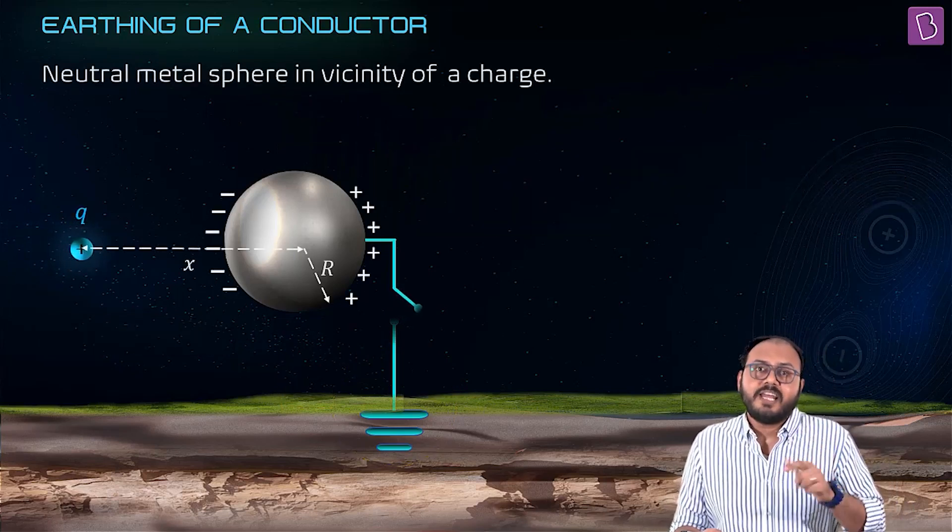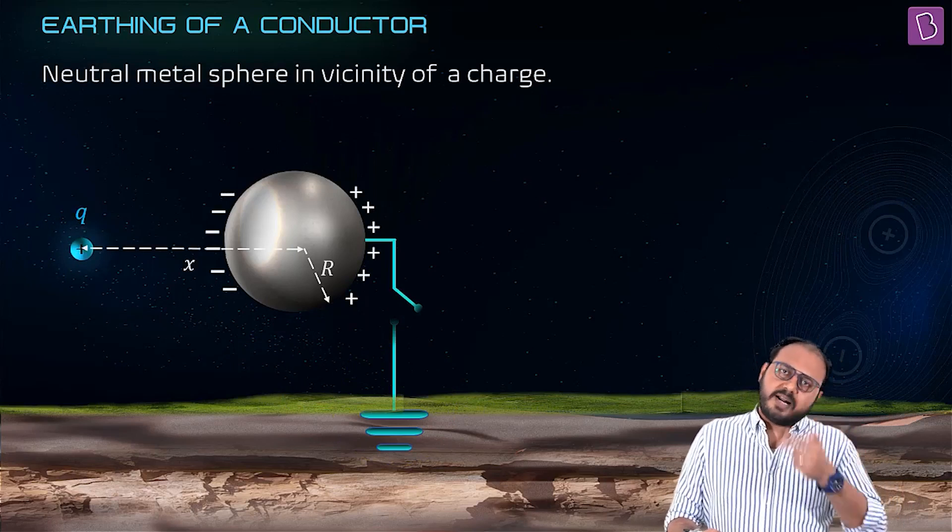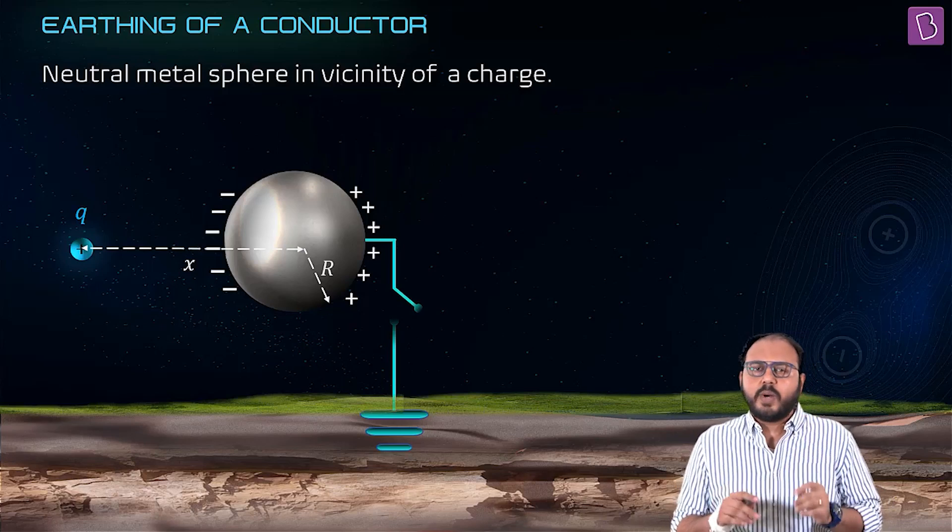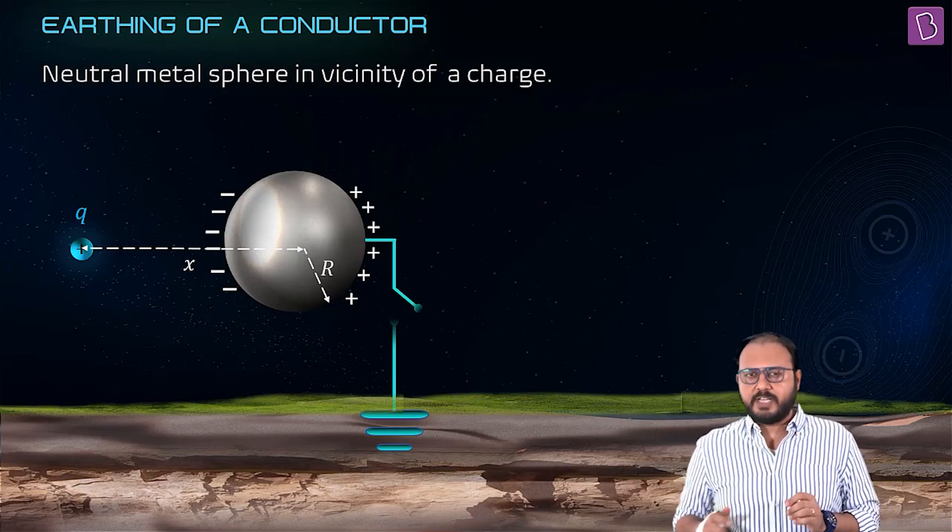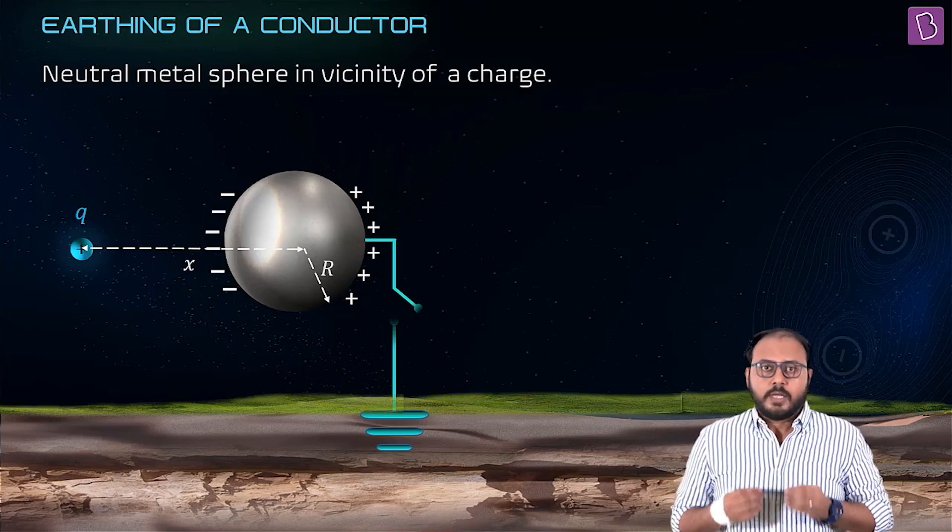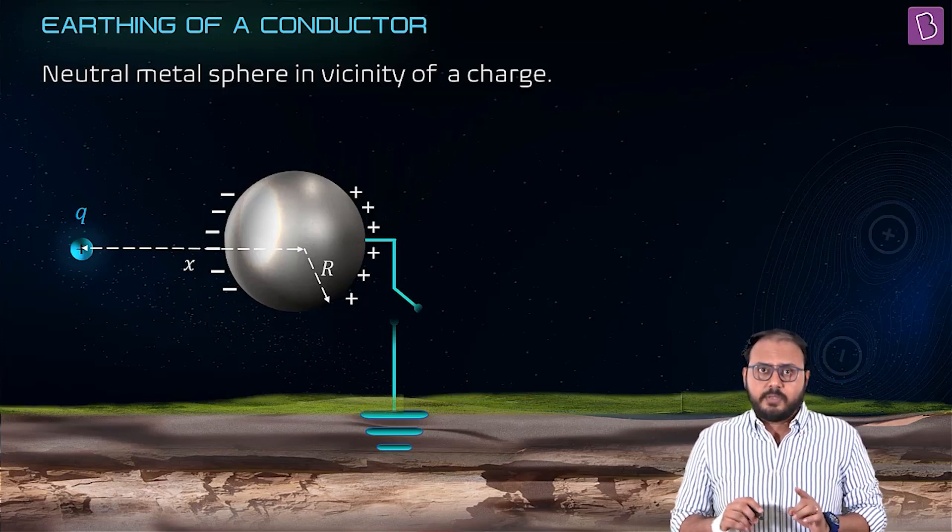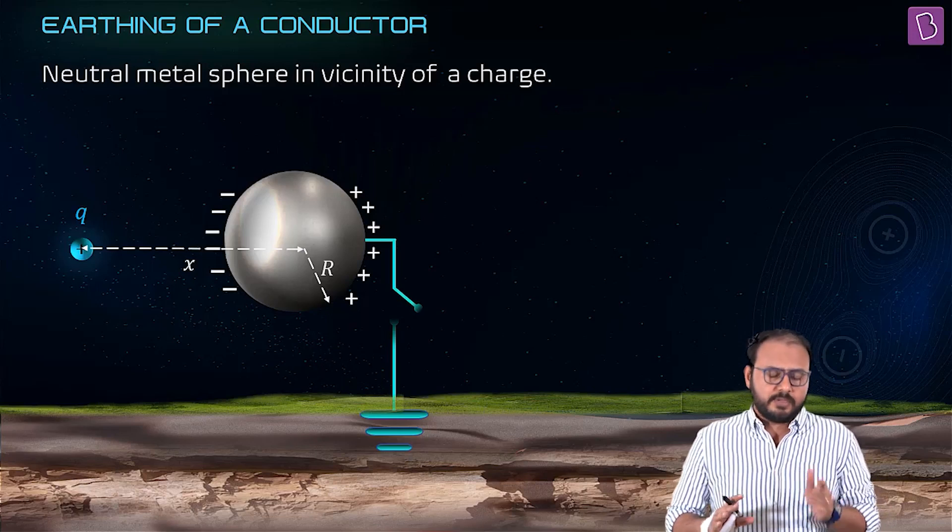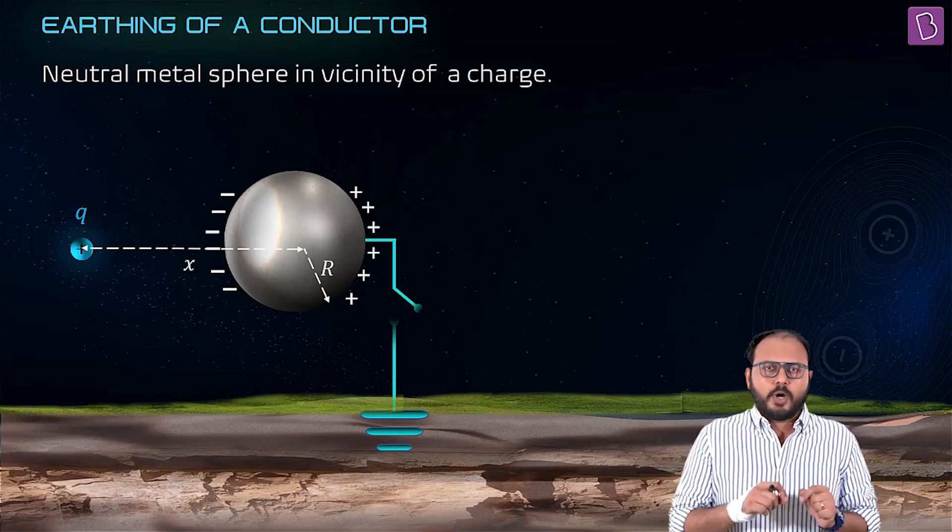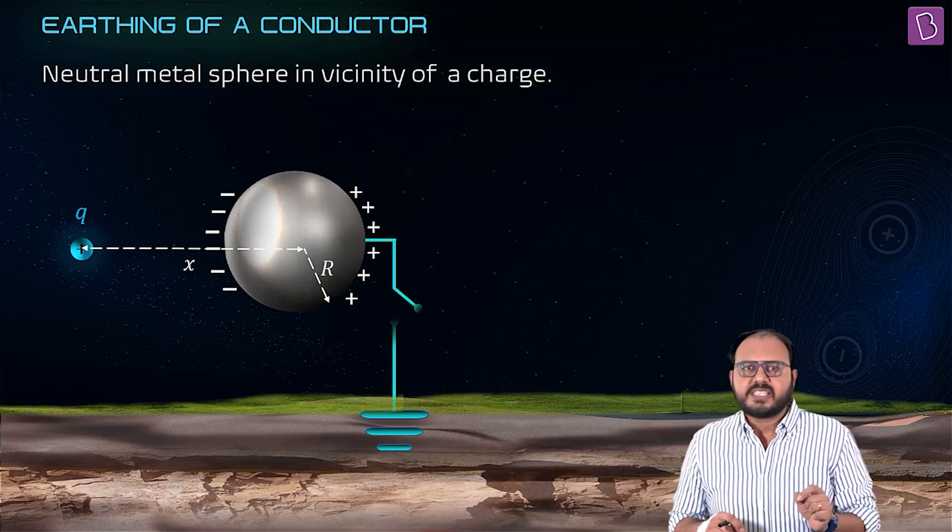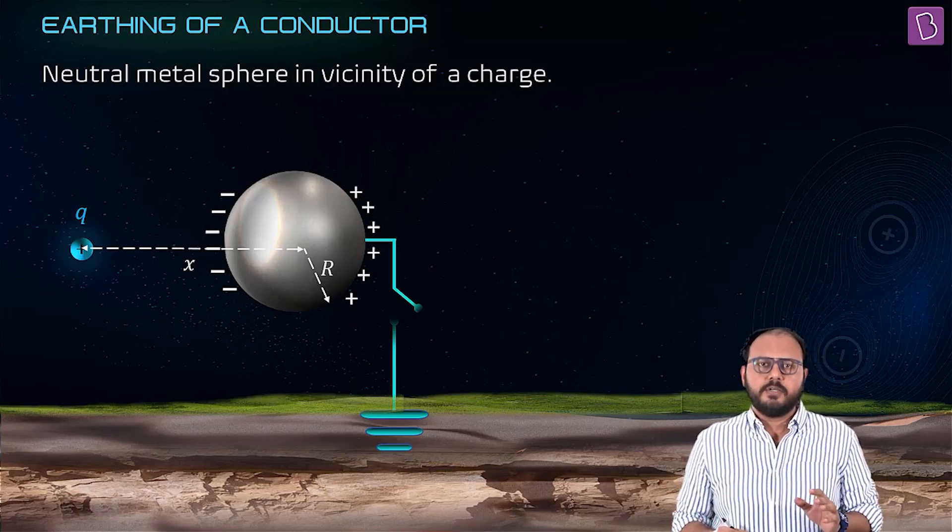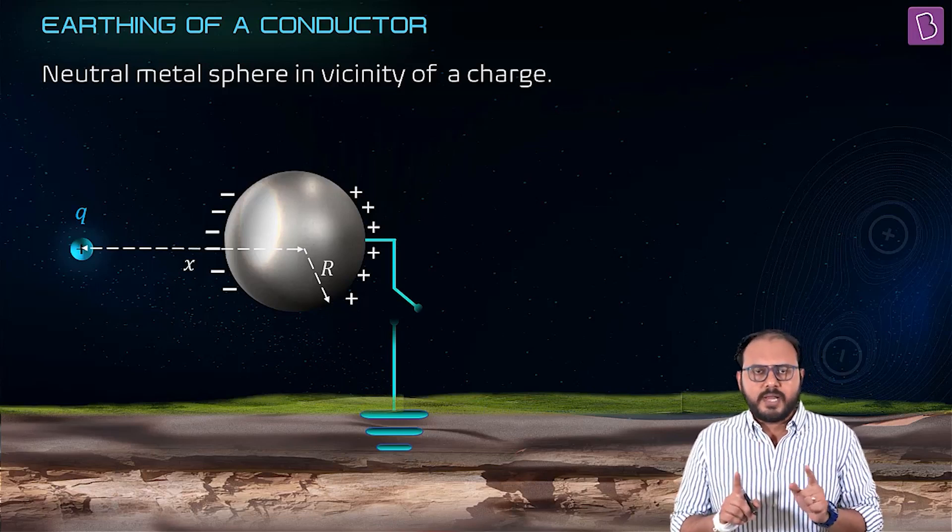You have an already neutral metal sphere - already neutral, no charge - but there is one charge in the vicinity of that sphere. Take a look: isolated metallic sphere, neutral, no charge on the sphere. What did you do? Two things: you brought another Q charge in vicinity, so induction will happen, and you earth the sphere.